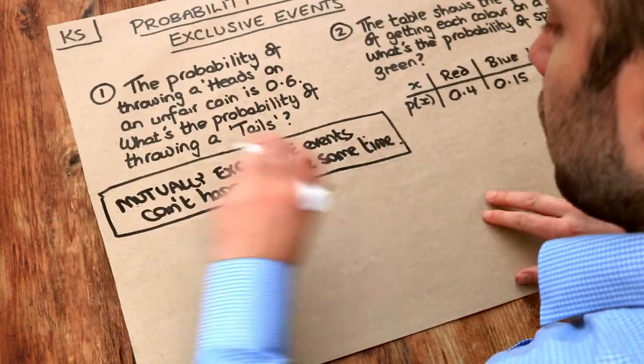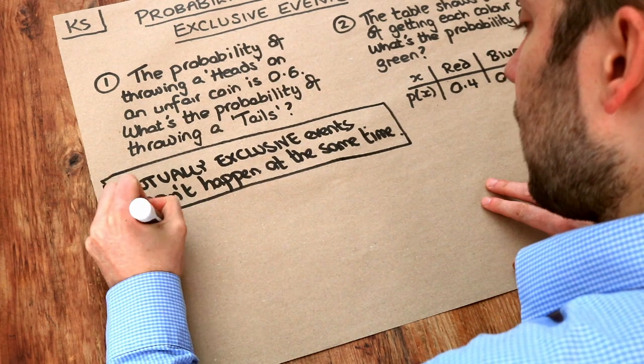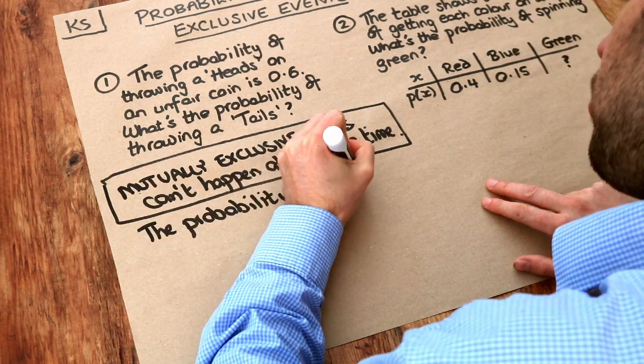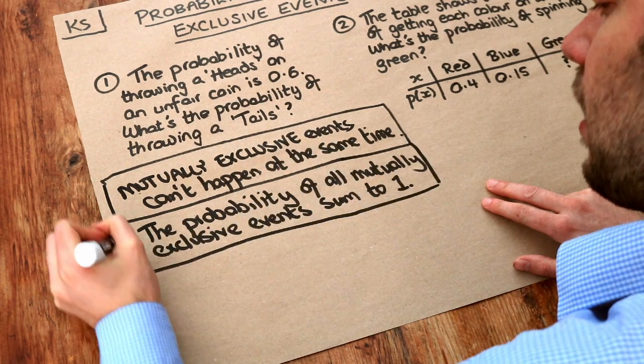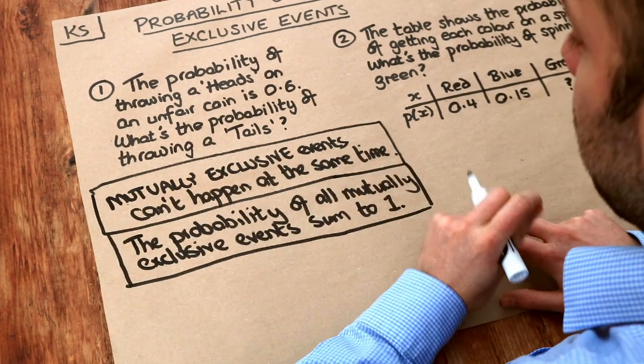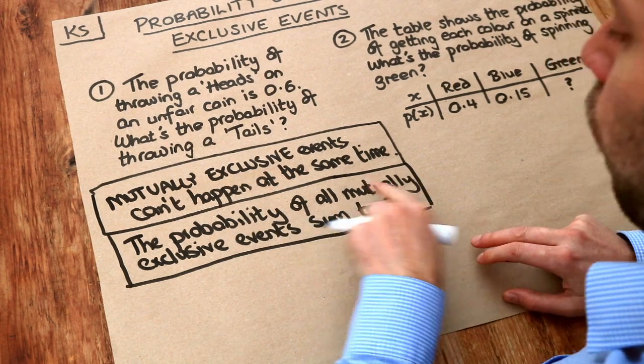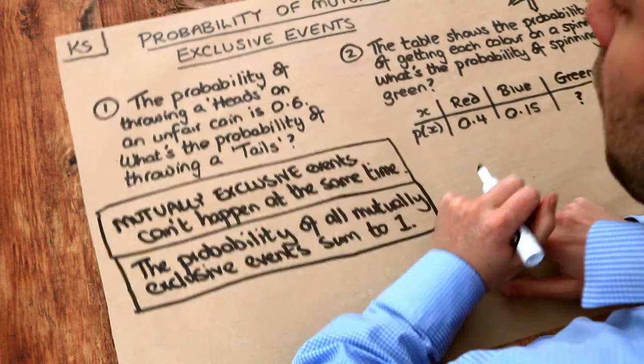And the other key fact that we need to know is that the probability of all mutually exclusive events sum to one. So the total probability for any scenario we have is also one. Now what do I mean by all mutually exclusive events? Well, it's all the things that can happen.